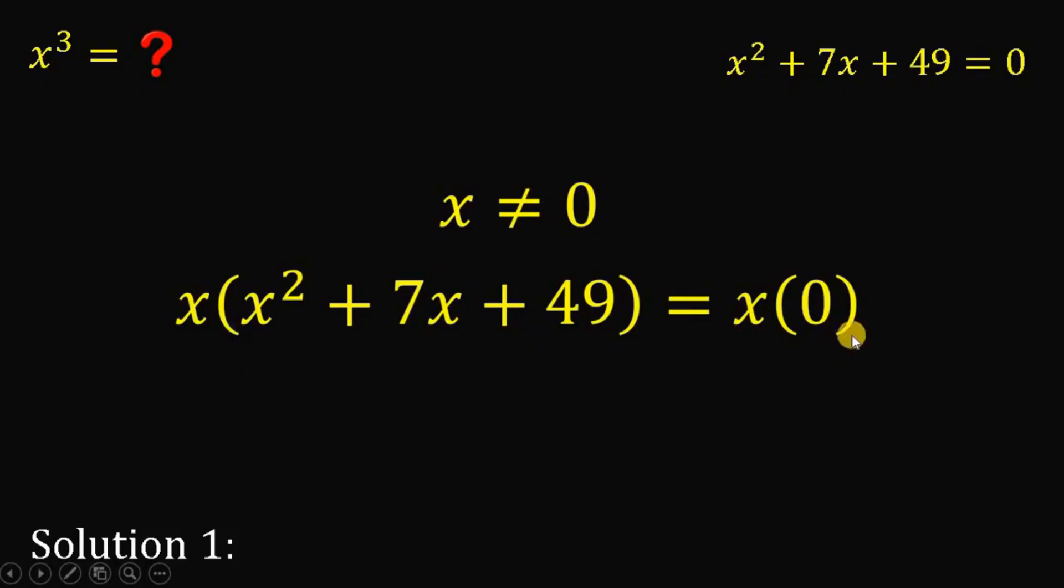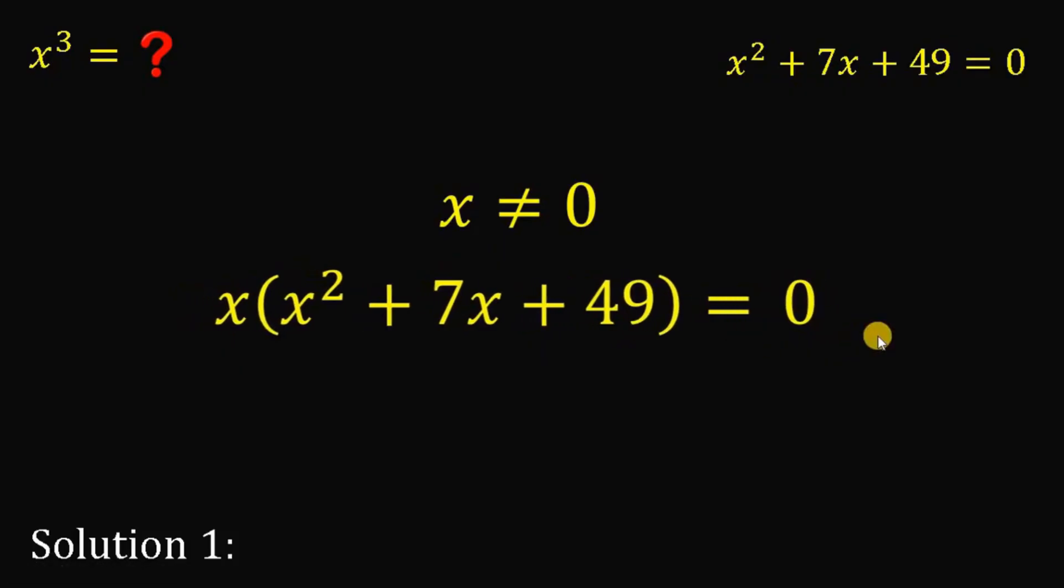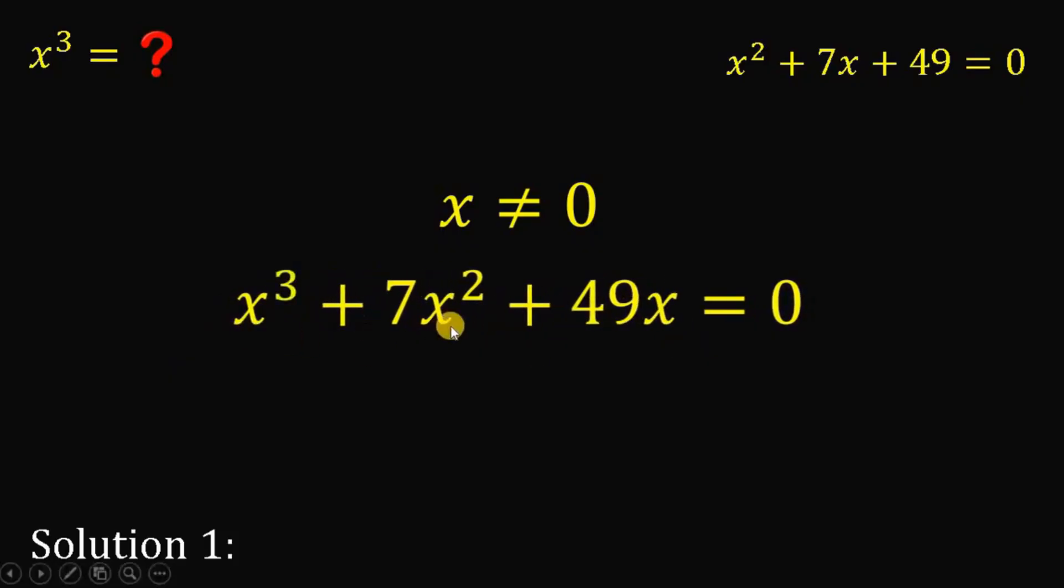On the right-hand side, x times 0 is just 0. And on the left-hand side, x multiplied by x squared plus 7x plus 49 will give us x cubed plus 7x squared plus 49x.